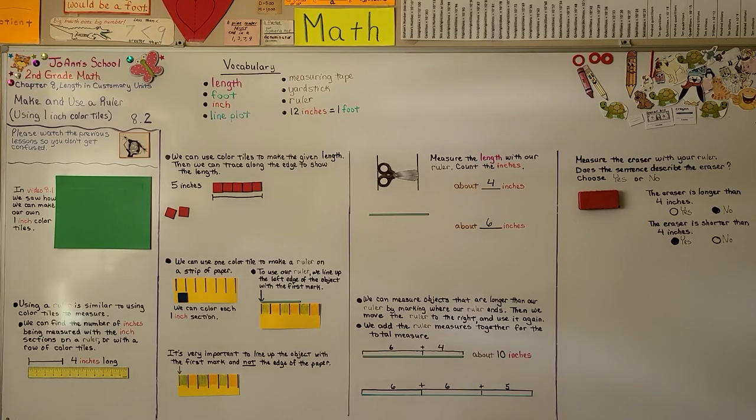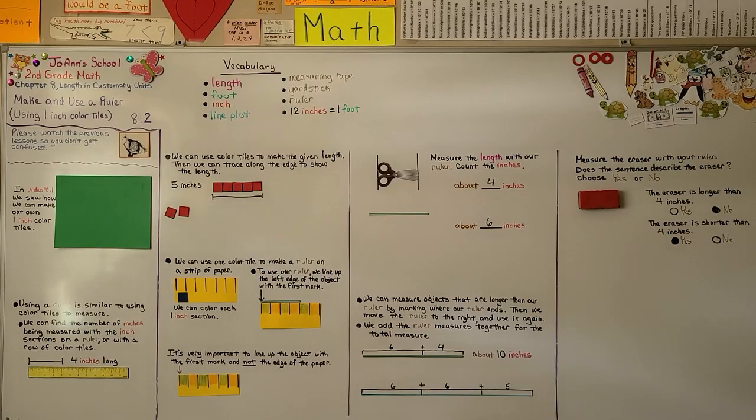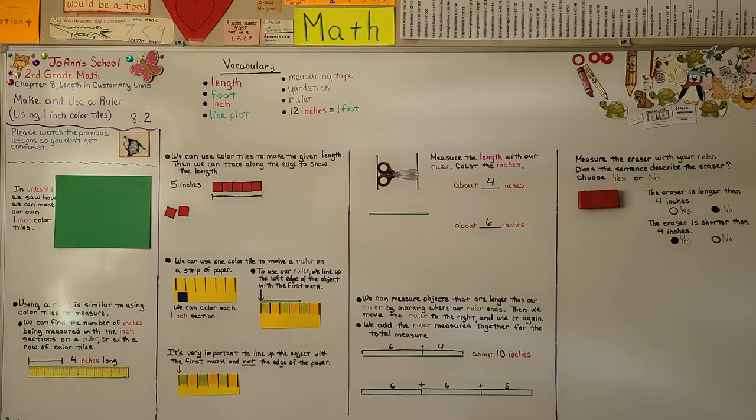So you can try making your own color tile ruler with one inch color tiles. And remember how important it is to line up the object with the first mark and not the edge of the paper. Our next lesson 8.3 we're going to talk about how to estimate the length of an object in inches by comparing it to something else.